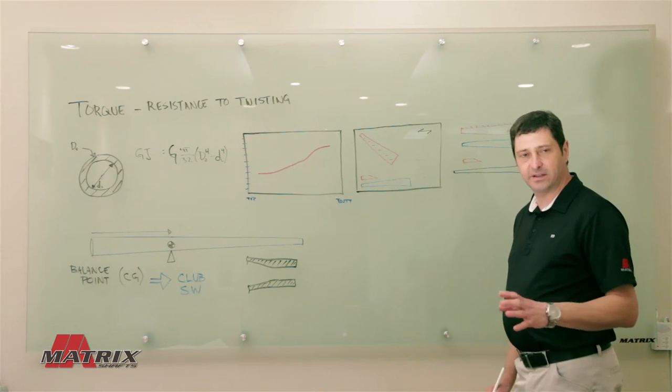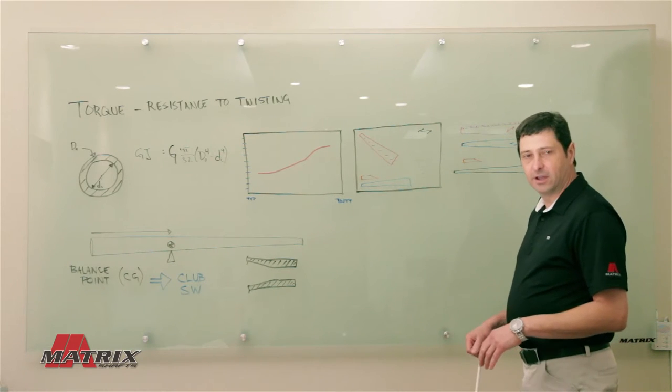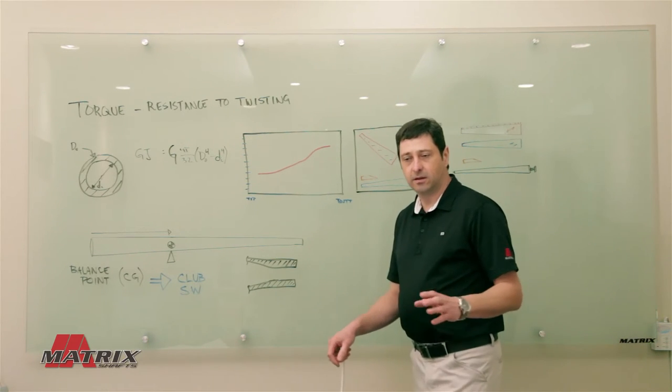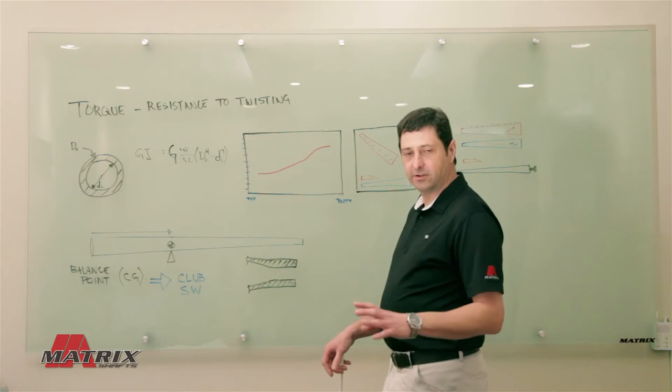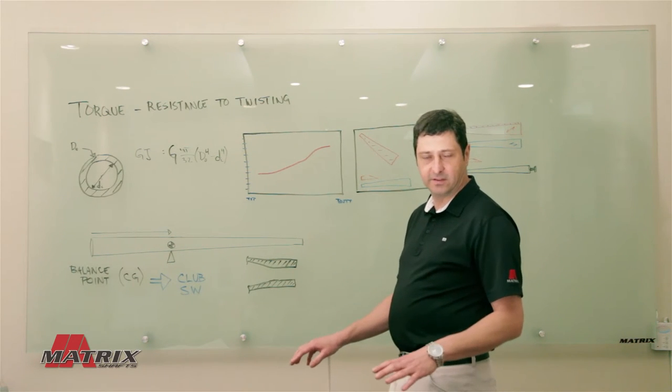Torque is independent of flex, and with a graphite shaft you can manipulate the flex profile and the torque profile independently without influencing the other.